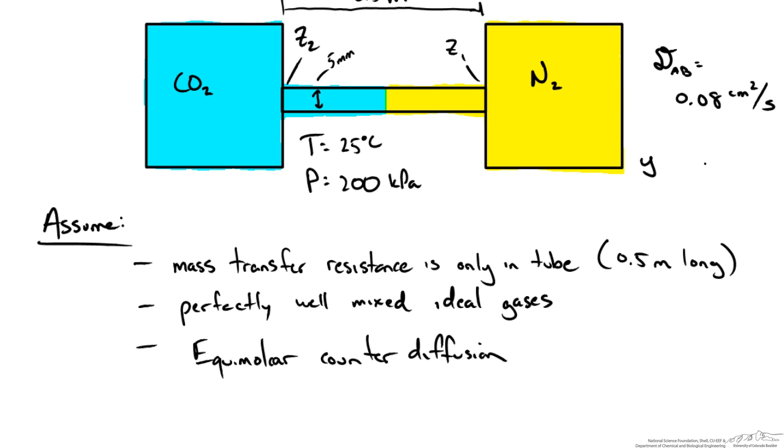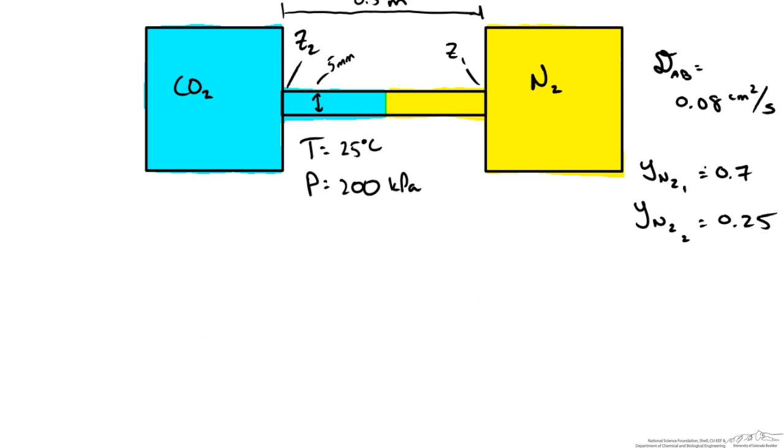We want to know when the mole fraction of nitrogen at one end is going to be 0.7 and when it will also be at the other end equal to 0.25. So for equal molar counter diffusion, or EMD, we know that our equation for mass transfer can be defined as the following.